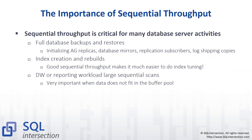The importance of sequential throughput for DBAs: things you do on a daily basis, like full database backups and restores, initializing AG replicas, mirrors, replication subscribers, log shipping, and secondary copies all rely on sequential throughput performance. Another really big one is index creation and index rebuilds. If you've got really good sequential throughput, you're going to be a lot more likely to do effective index tuning, which is one of your best weapons as a DBA.